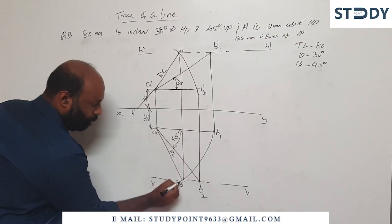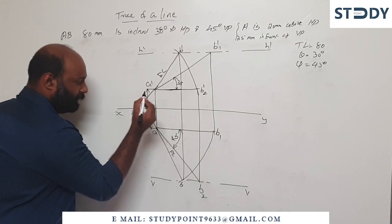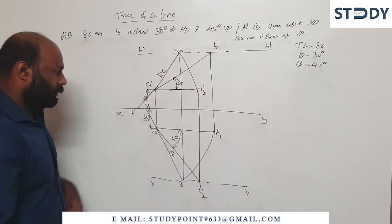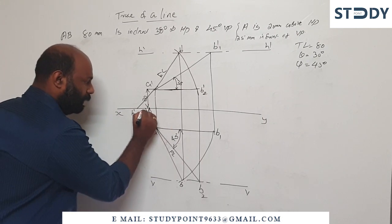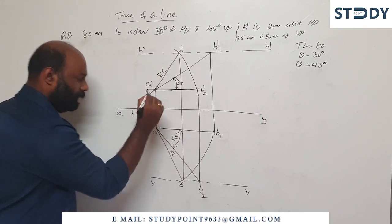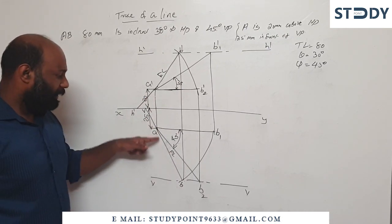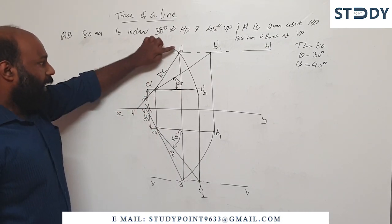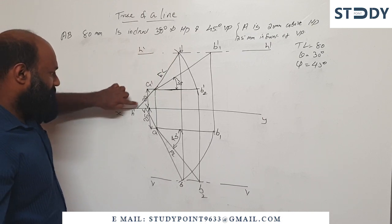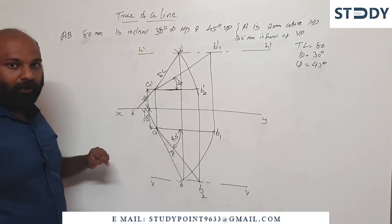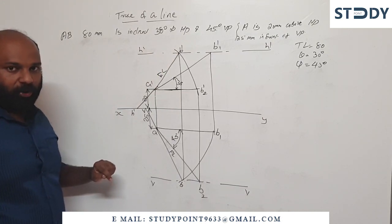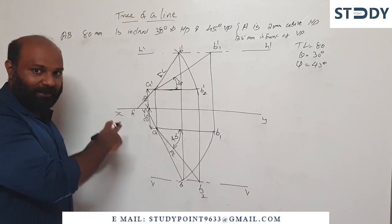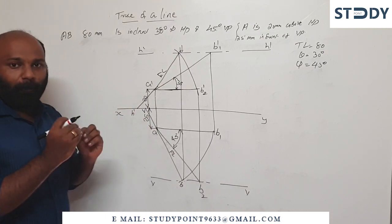Extend the top view — I should extend the back load, I should mark a point where it meets the XY line. If A-B top view extended meets the XY line, that point is V. If A'B' front view extends the XY line, that point is H'. We call both H' and V, and V is perpendicular to the XY line.